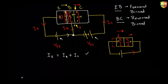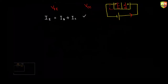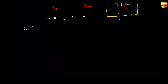This same transistor can be connected in multiple ways. In our syllabus, we have a special kind of connection discussed in your NCERT, that is common emitter configuration. So we'll talk about common emitter configuration, and while we discuss common emitter, you will understand how and why there can be many other types of connections. Write down common emitter — CE — common emitter type configuration.